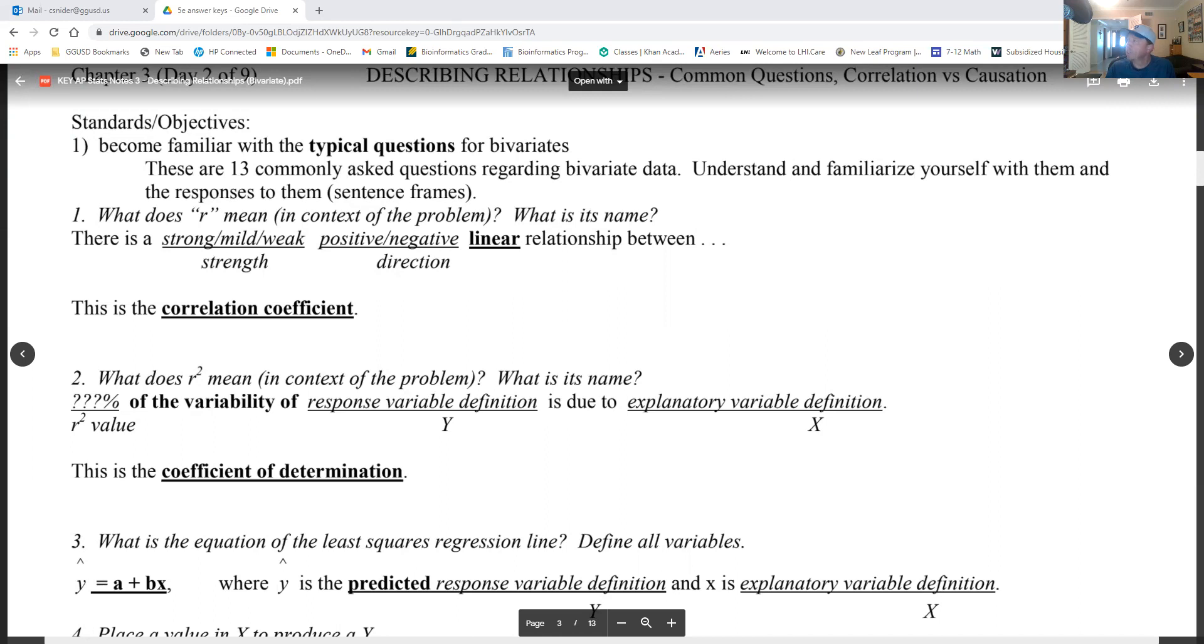Okay, this is Chapter 3 Day 2 on bivariate data. We're going to go through 13 super common questions on the AP Stats test that relate to bivariate data, and they're listed here. At the very end I'll have a prompt and we'll go through it.